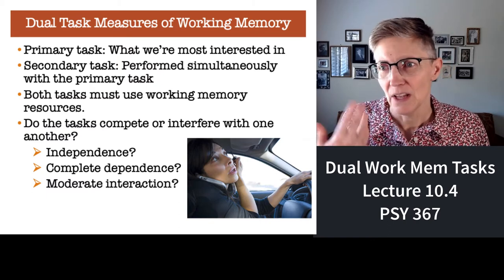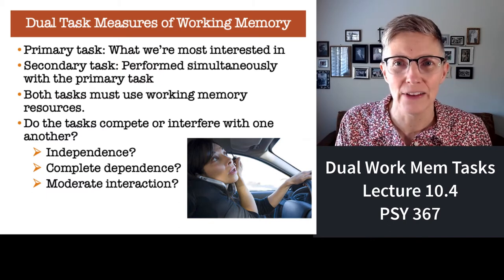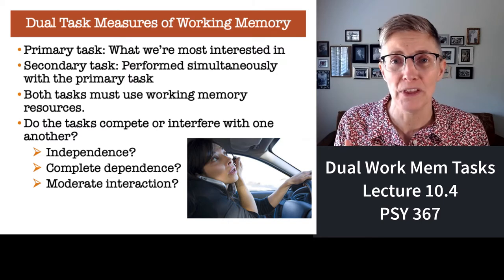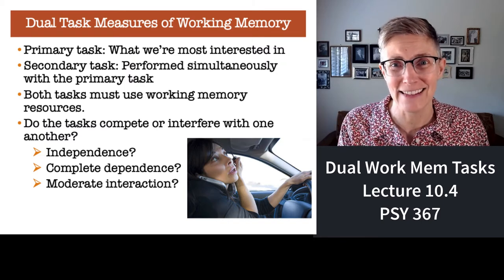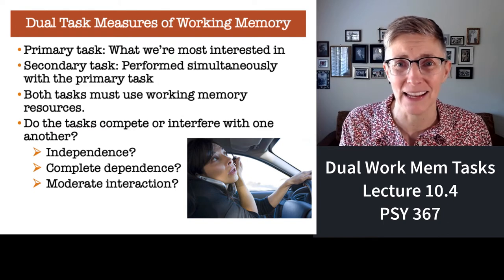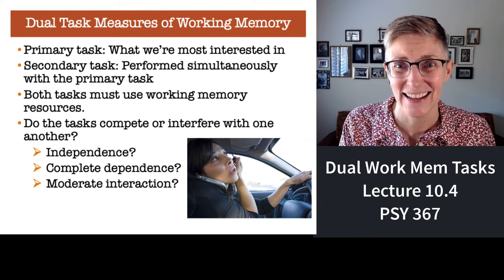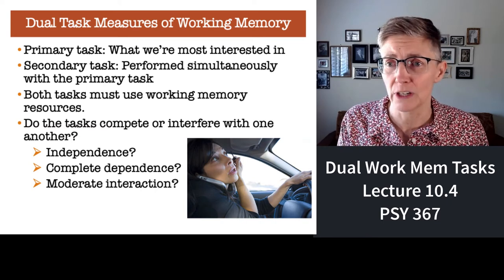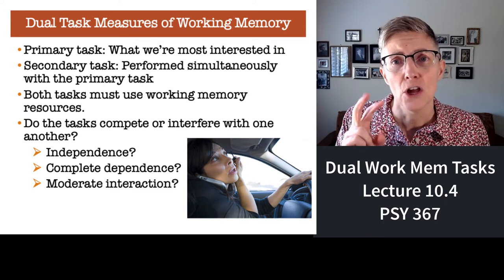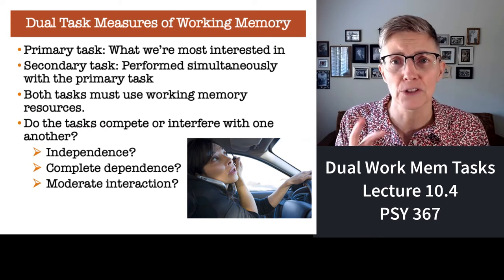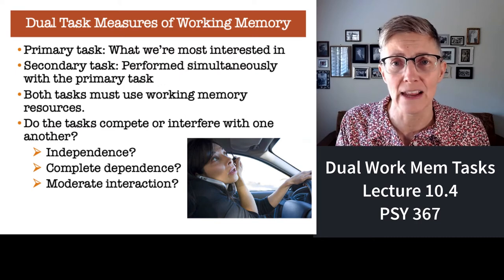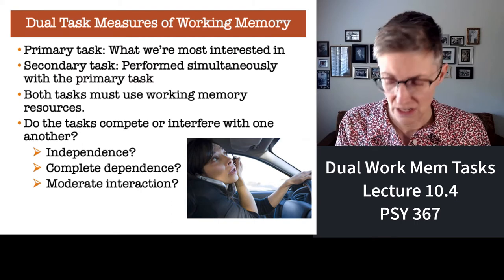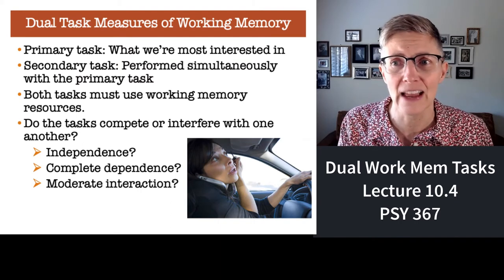For example, this woman who's trying to drive and put eye makeup on at the same time — let's hope that driving is her primary task and that makeup application is her secondary task. Both tasks certainly involve working memory. But the question is, do these two tasks compete for the same resources? Do they have access to independent resources? How does it work?